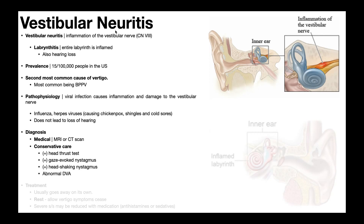If somebody has a history of taking an ototoxic medication, that makes it less likely to be vestibular neuritis. They simply took an ototoxic medication that caused damage to the inner ear on one side — that would be more of a general hypofunction caused by an ototoxic medication.